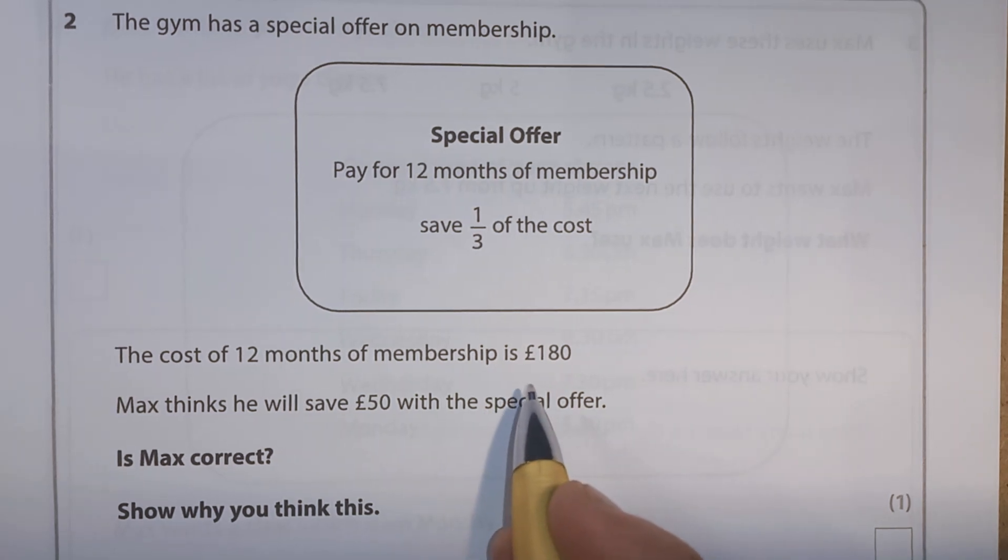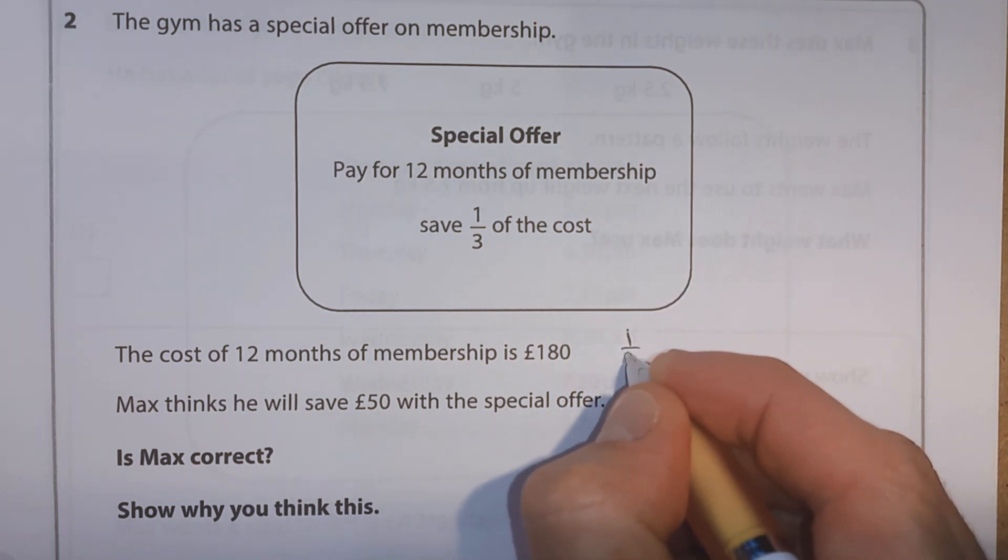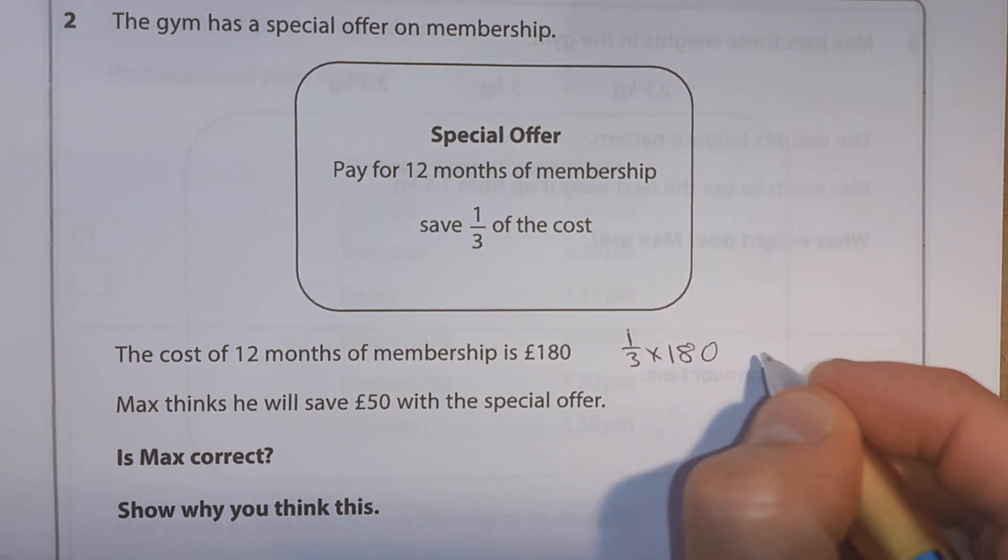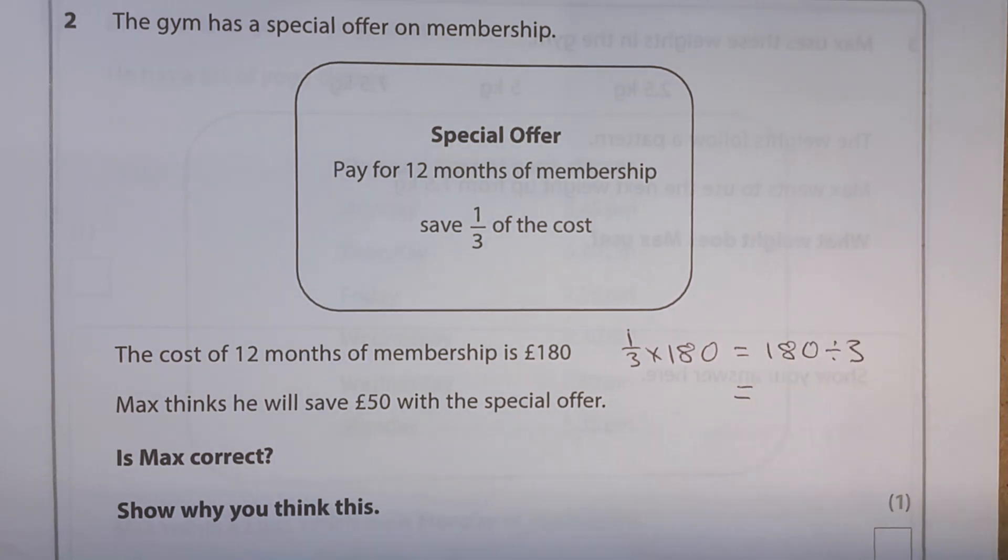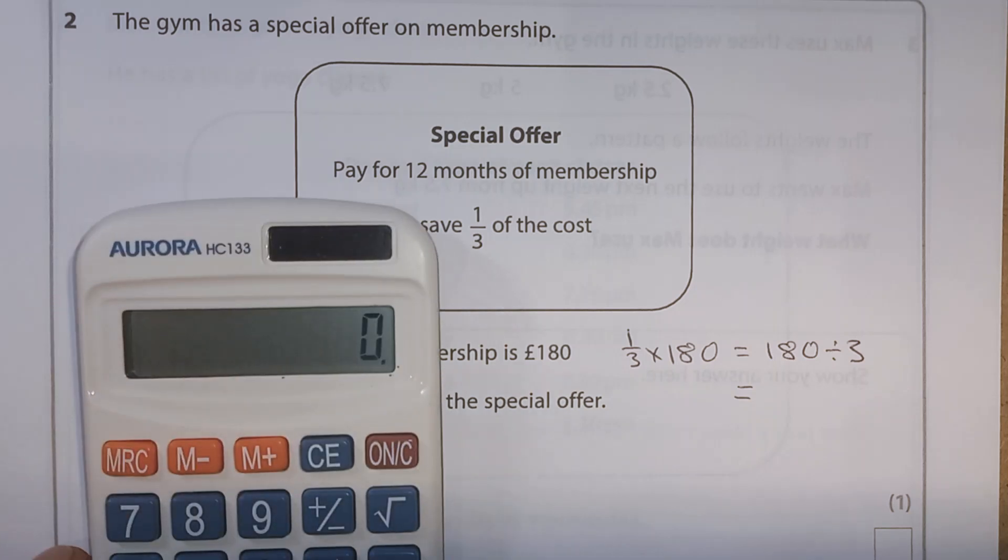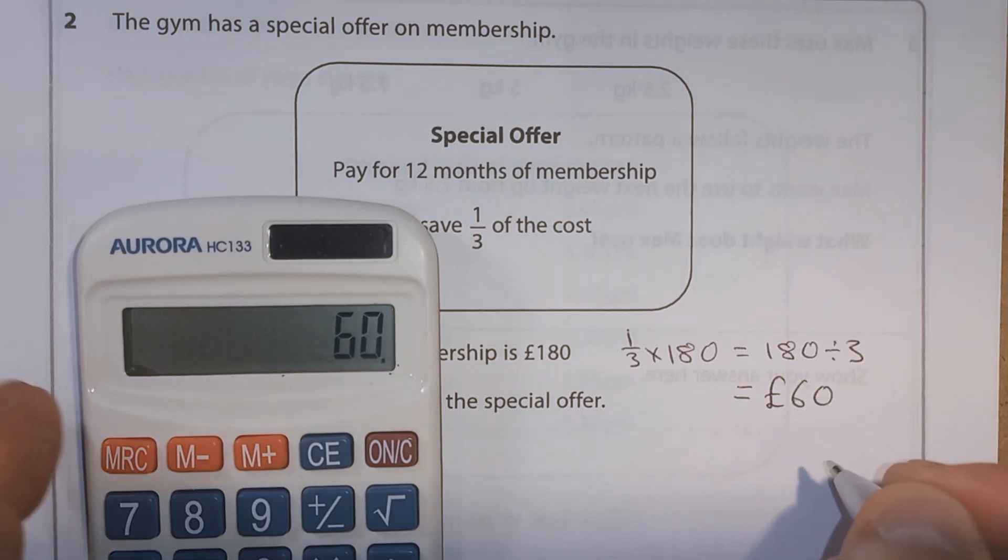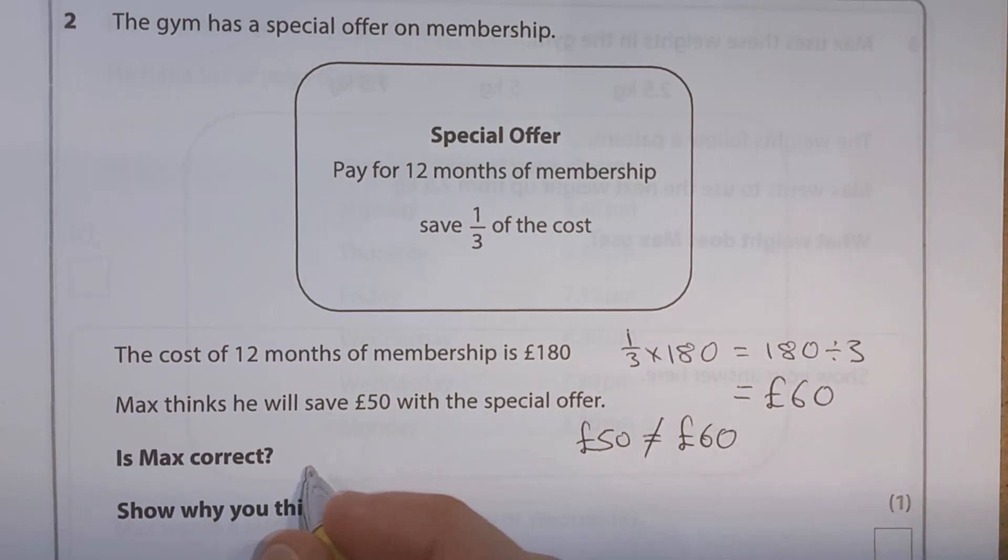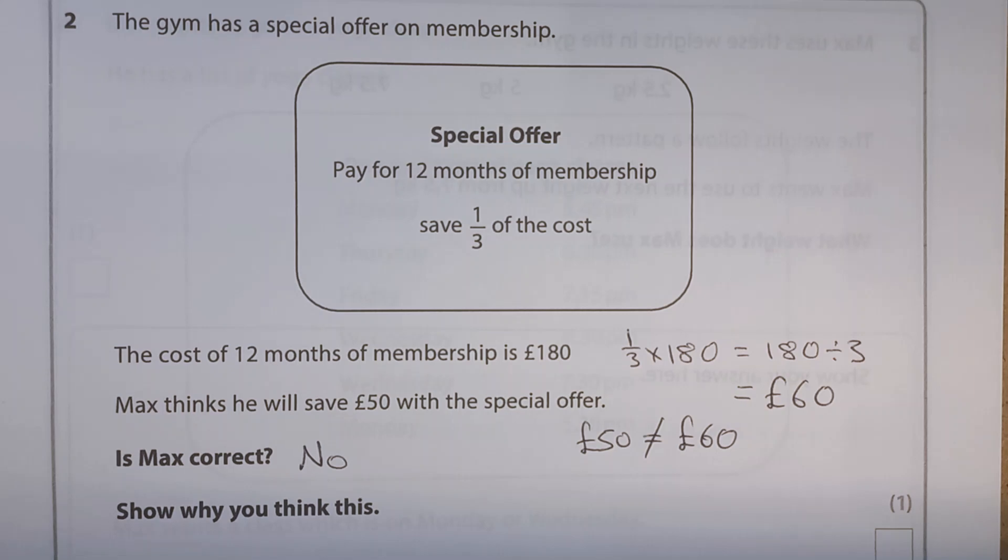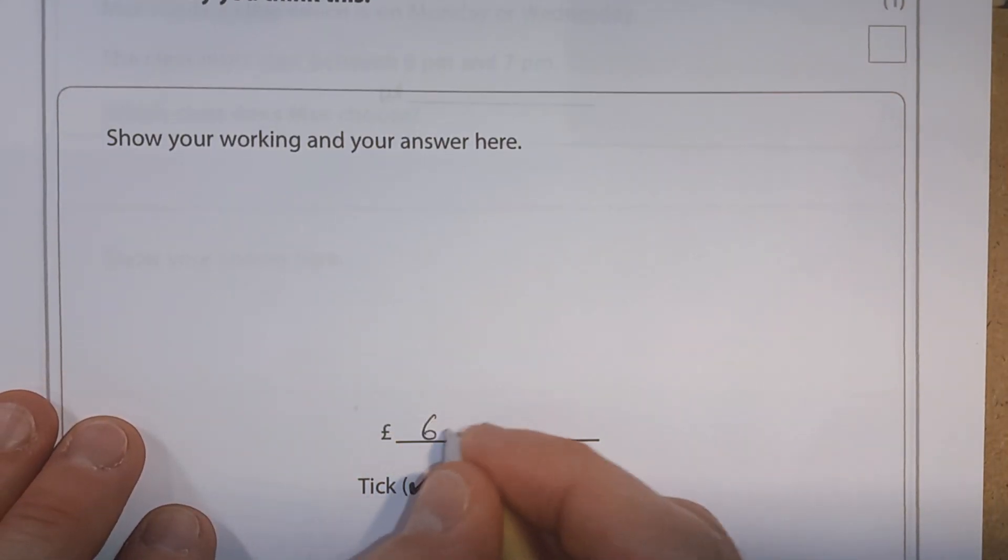Okay, so basically, we want to work out what a third of £180 is. So you can think of it as one third times 180. Or you can think of it as 180 divided by 3. And remember, this is the calculator section. So 180 divided by 3 gives us £60. Well, £50 is not equal to £60. So is Max correct? No. And then we can tick no down here and we can put £60.